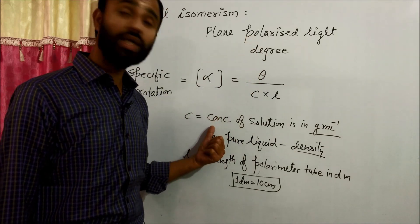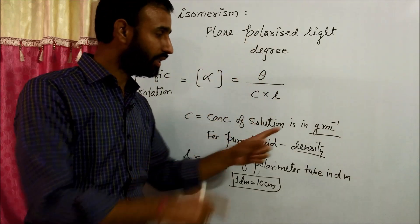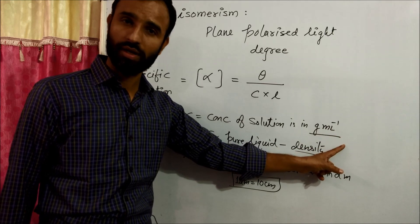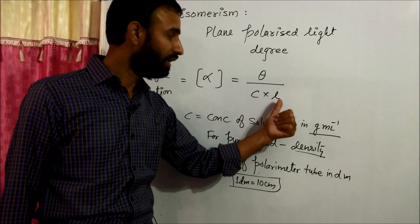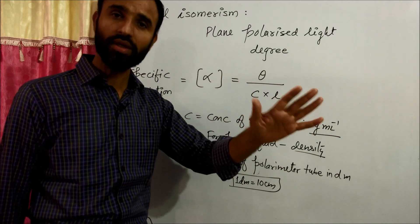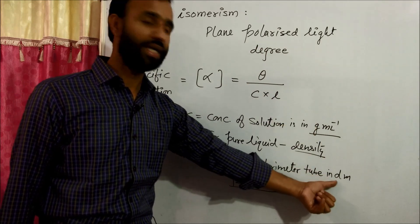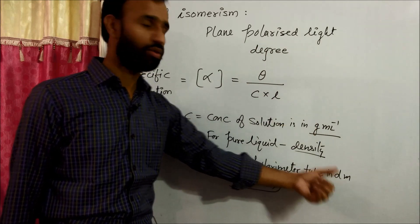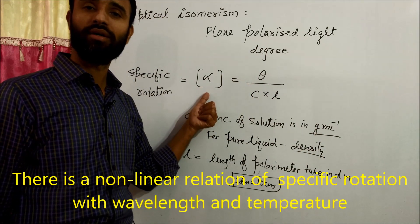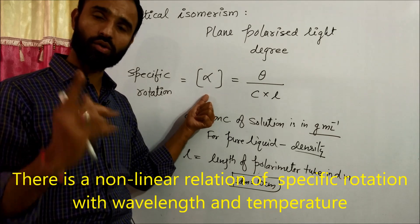If the concentration is given in other units, convert it into gram per ml. If the length is given in any unit, convert it into decimeters. Then you will get your specific rotation.